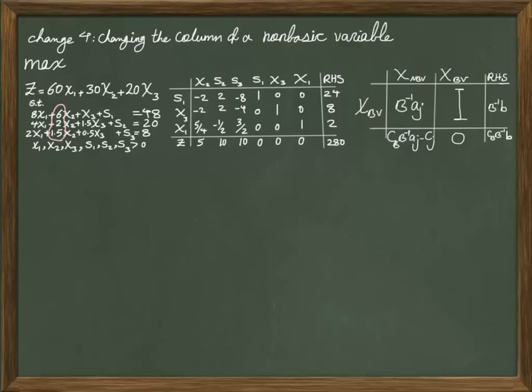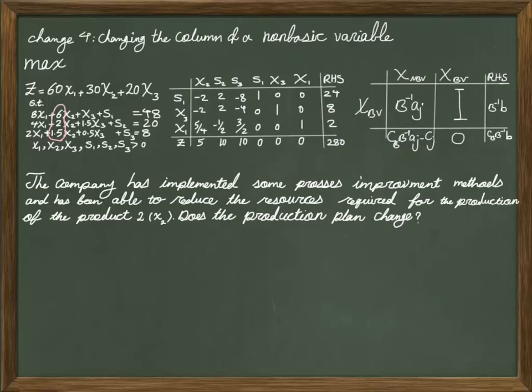So basically I am trying to see if I change some of these coefficients or the amount of resources that I use for product X2 how that would impact my final solution. For example, suppose the company has implemented some process improvement methods and has been able to reduce the resources required for the production of product 2 or X2. Does the production plan change? So this is the type of question that you usually get.